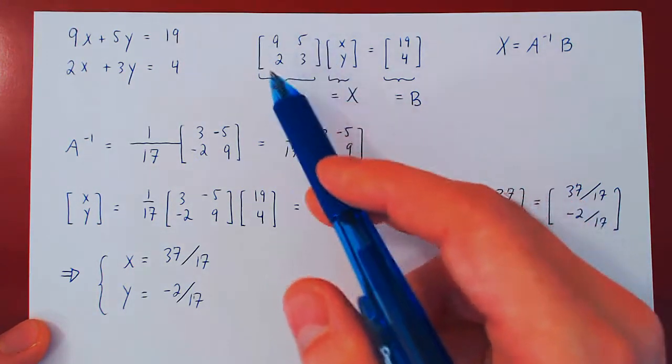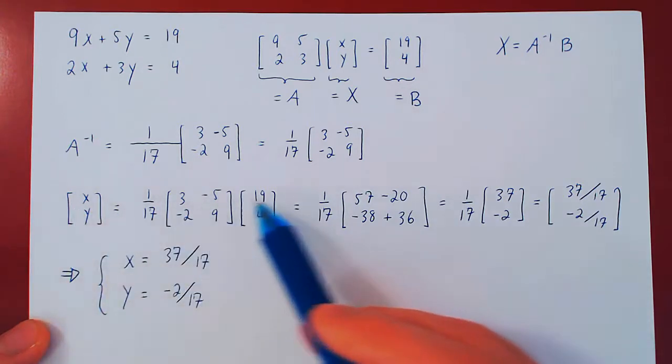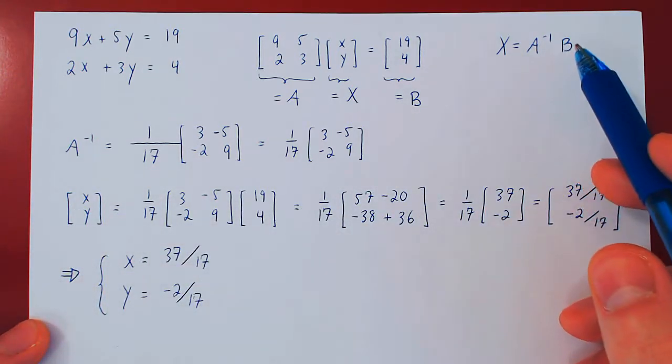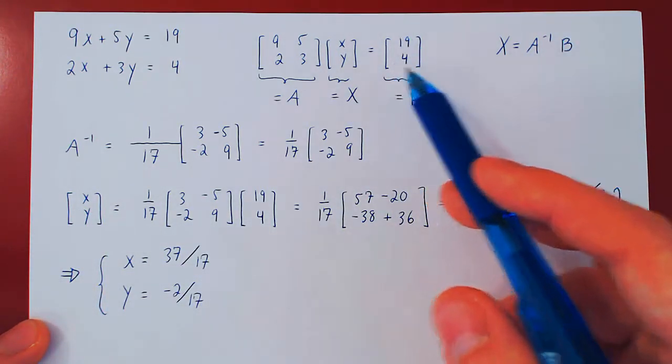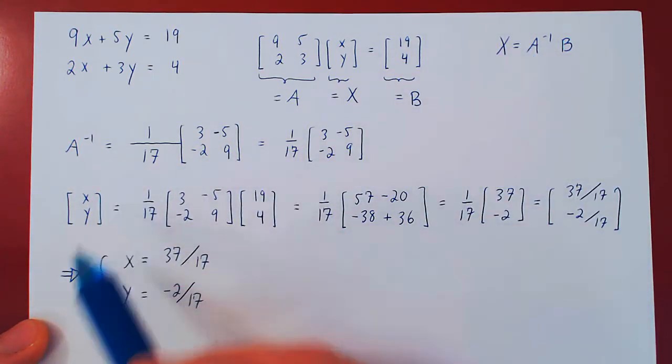And this is exactly the answer that we have obtained when we solved the system previously using row reduction. And so you see, once you have the inverse of the matrix of coefficients, solving for the system is just one line. Multiply the column of constant terms by A inverse, and you will get the vector of variables. And that's it.